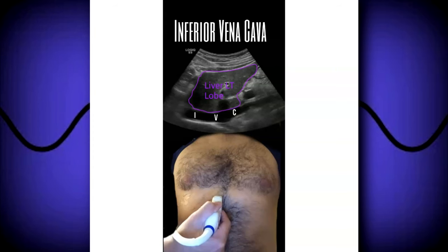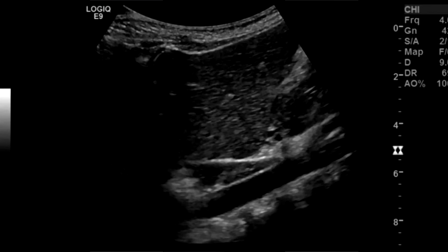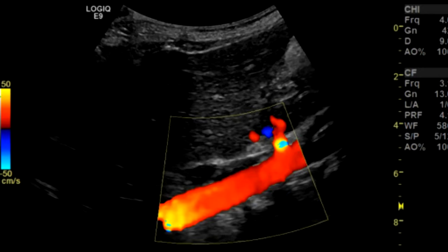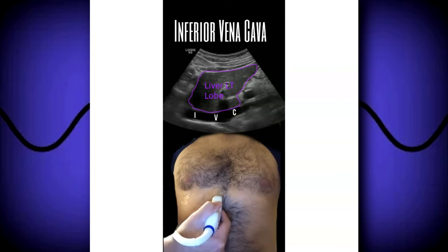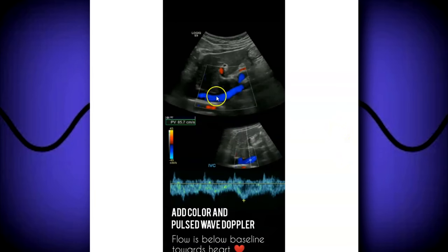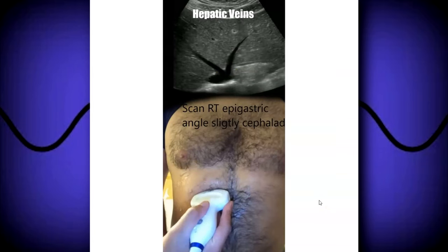You can begin with the IVC — every place will have a slightly different protocol. You could also include the aorta. You can begin with the IVC right behind the left lobe of the liver, scan midline slightly to the right, and you'll see the IVC posterior to the caudate lobe entering the right atrium. Take a grayscale image, a color Doppler image, and a spectral Doppler image. The flow should be towards the heart.